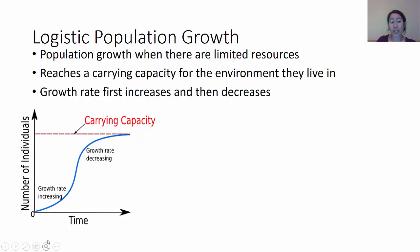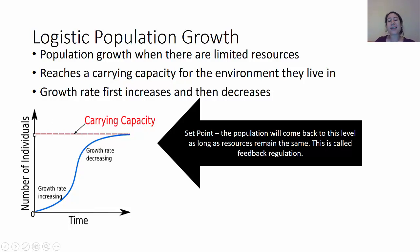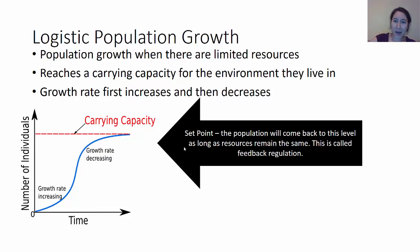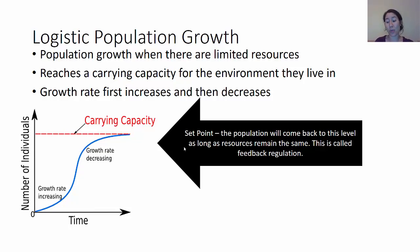We can see that the growth rate first increases — the slope is getting steeper, going up faster and faster — and then it decreases and levels out. The slope is still increasing, but not nearly as fast. In this, it's reaching the carrying capacity, which acts as a set point, meaning the population will come back to this level as long as resources remain the same. This concept is called feedback regulation.